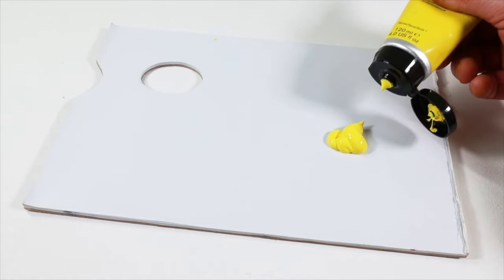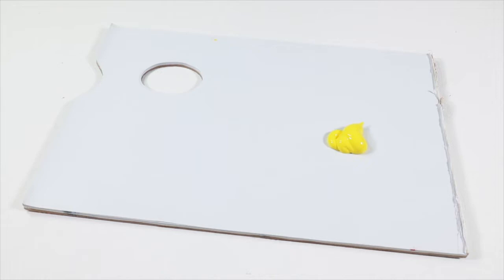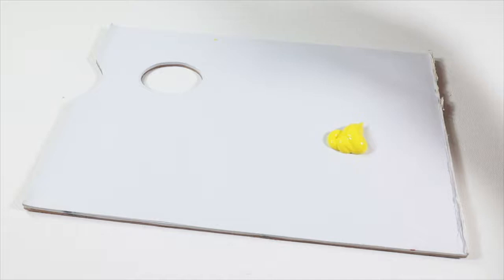For the first step we apply a small amount of Galleria Acrylic on a palette. This would preferably be a lighter color and can be either an opaque or a transparent color. Here we use the bright primary color Lemon Yellow, which is a transparent single pigment color pigment PY3.